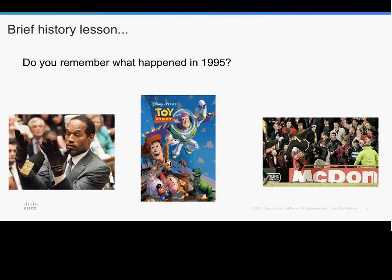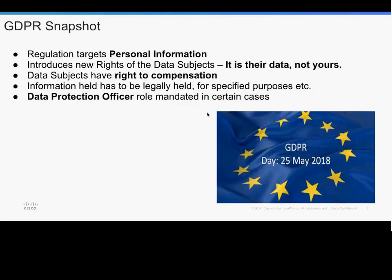The data protection law we have in Europe today dates back more than 20 years, first adopted in 1995. To put that into context: 1995 was the year of the O.J. Simpson trial, the first Toy Story movie, Cantona's kick in the crowd, and when Princess Diana announced her affair with James Hewitt on national TV. A very long time ago, when very few people used the internet or had a mobile phone, and no one knew what social media was. In fact, 17 years ago less than 1% of Europeans used the internet.